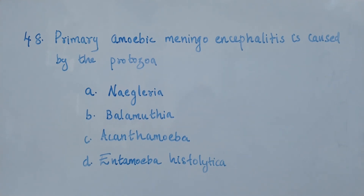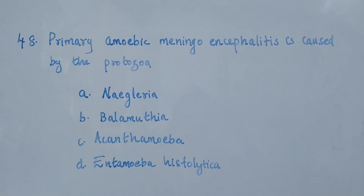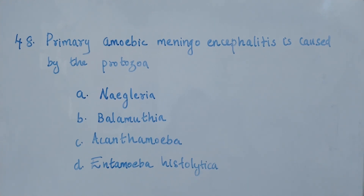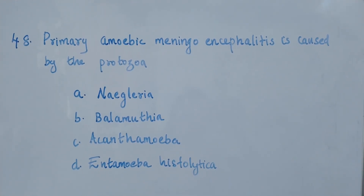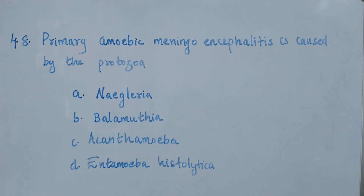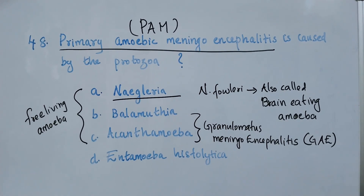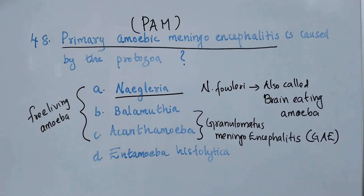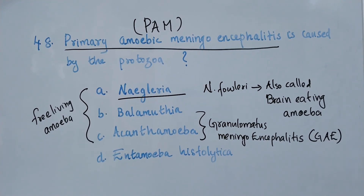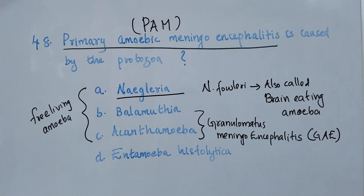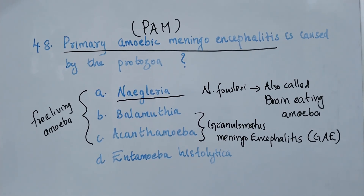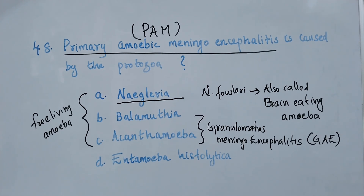Question number 48. Primary amoebic meningoencephalitis (PAM) is caused by: option A, Naegleria; option B, Balamuthia; option C, Acanthamoeba; option D, Entamoeba histolytica. The right answer is option A, Naegleria. Naegleria fowleri is the causative agent of primary amoebic meningoencephalitis and is also called the brain-eating amoeba. Balamuthia and Acanthamoeba are also free-living amoeba that can cause meningoencephalitis, but they cause granulomatous meningoencephalitis.